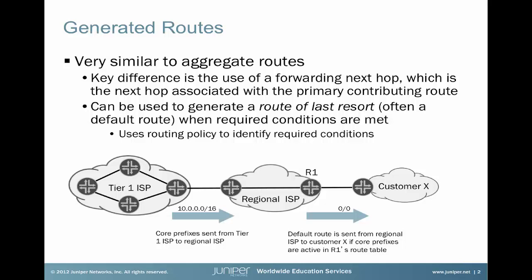In our example, we are advertising from the Tier 1 ISP a 10.0/16 route. Our objective is to advertise from R1 to Customer X a default route based on the presence of the 10.0/16 route being in the table. If we have the 10.0/16 route in the table on R1, we will generate the default route. If we don't, we will suppress the default route.